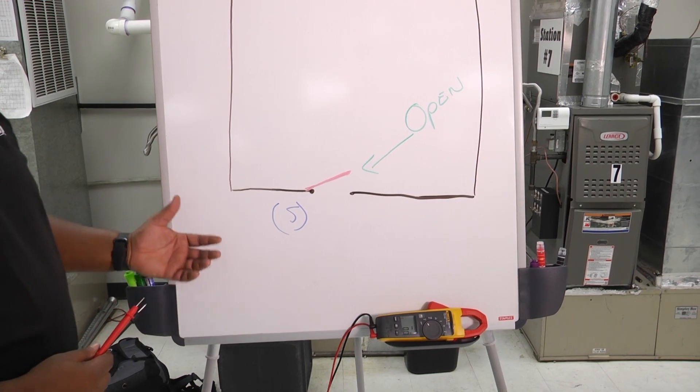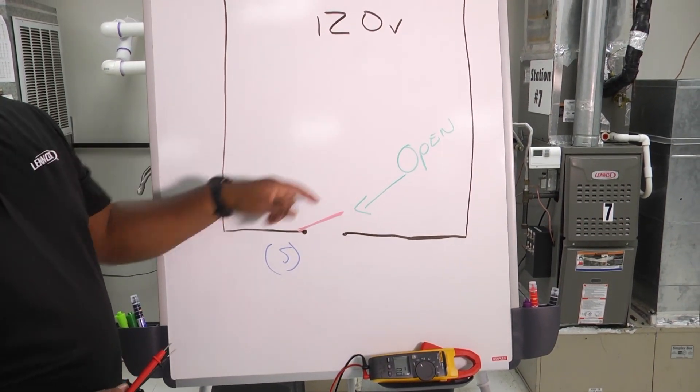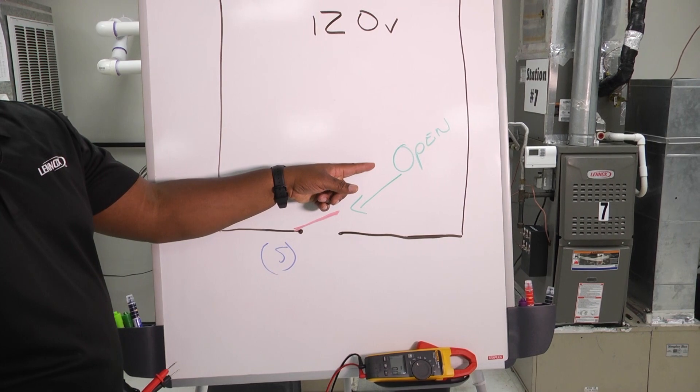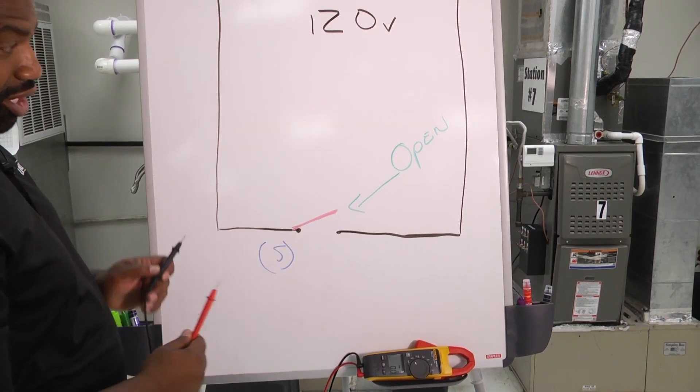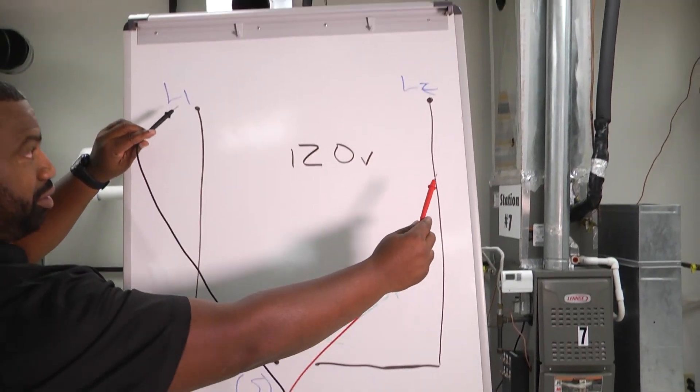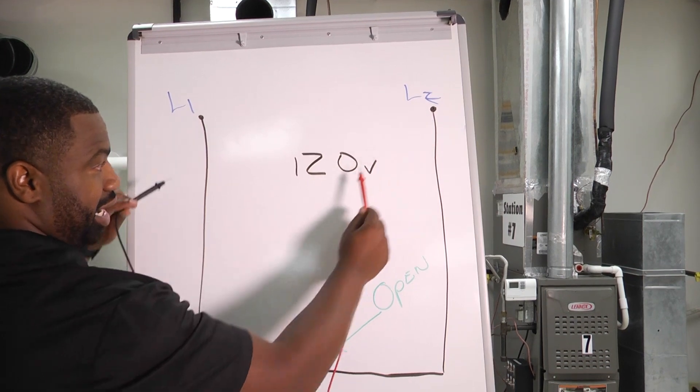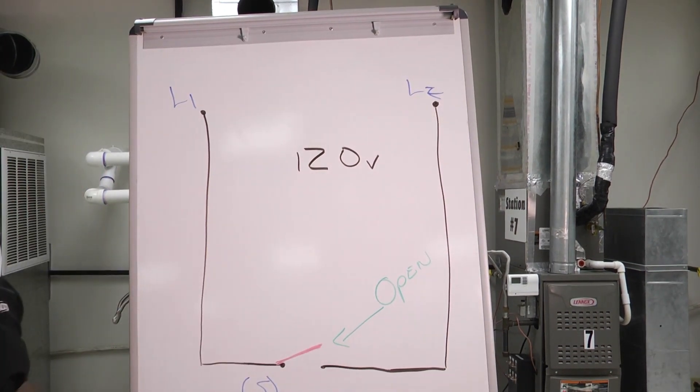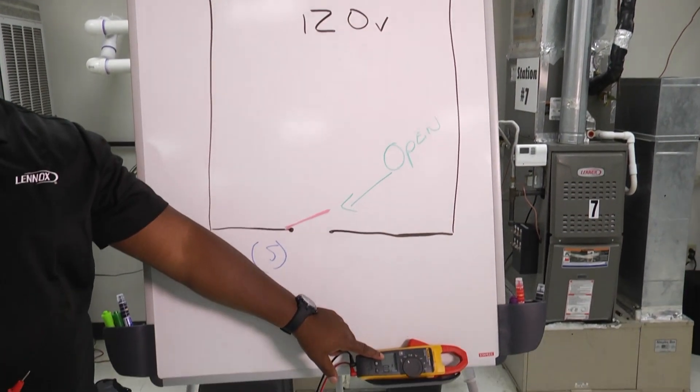So to recap, if this switch is open, our meters are going to read a difference in potential between two points and reflect 120 volts on the screen of our meter.